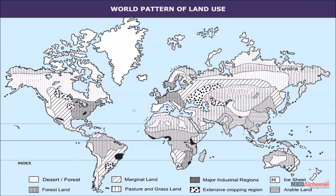World pattern of land use: The world pattern of land use is given on the map below. It will be observed that both climate and relief factors determine land use patterns. In major parts of the world, nomadic herding and primitive agriculture are still practiced, whereas in developed parts of the world, commercial agriculture is practiced.